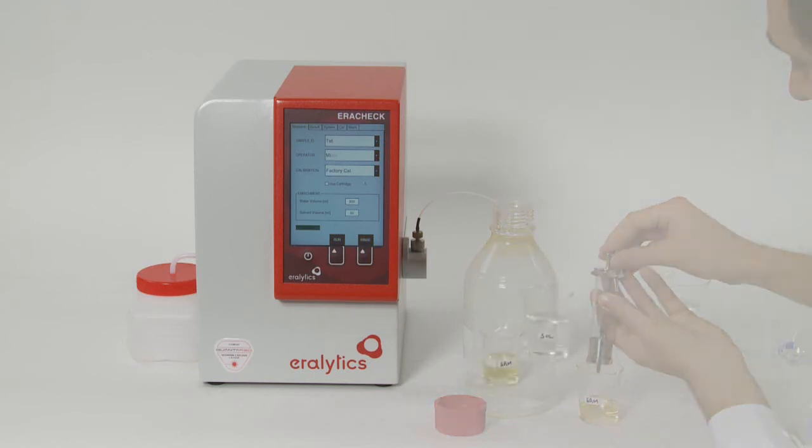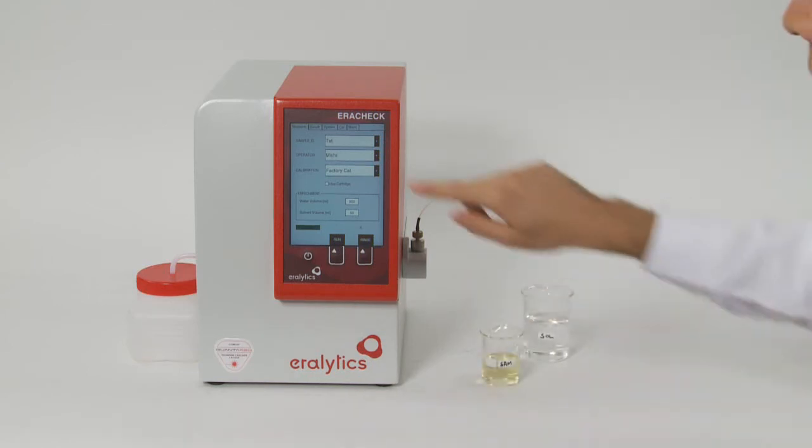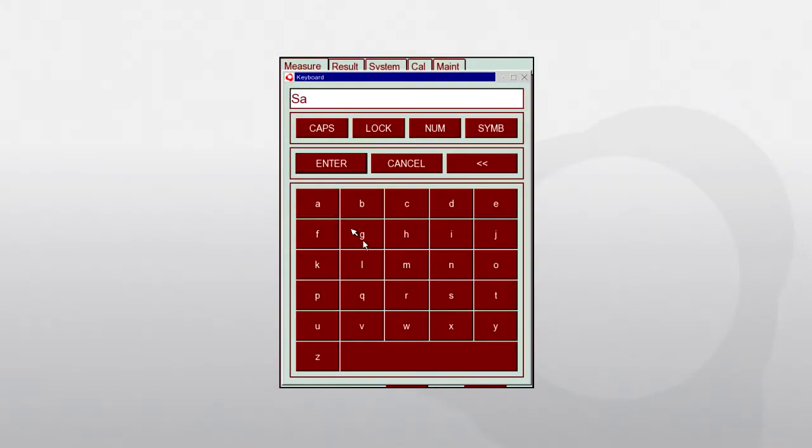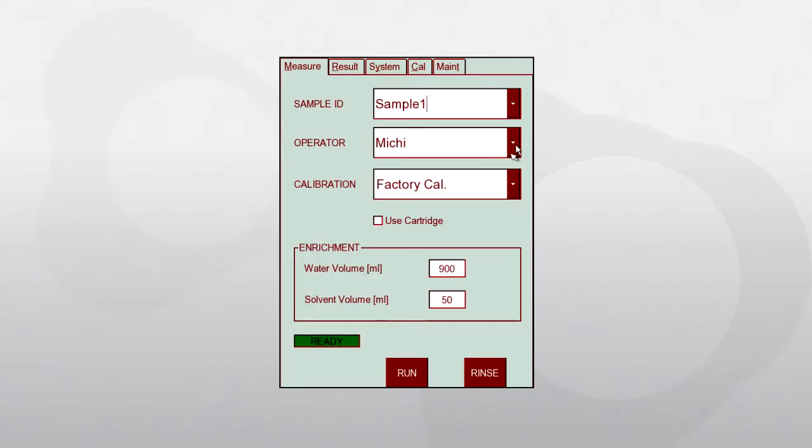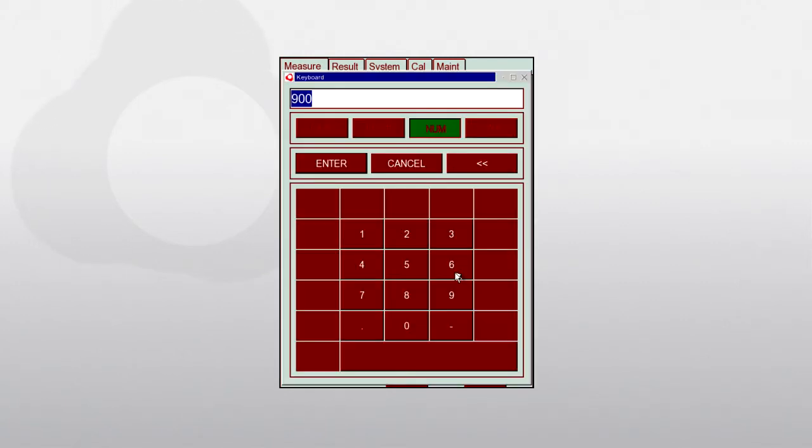Then use the delivered glass syringe to transfer approximately 20 milliliters of the top layer into a beaker glass. Now the extracted sample is ready for automatic analysis by the Error Check. Enter the sample ID and the operator on the pop-up keyboard or select them from the drop-down list of previously entered names.